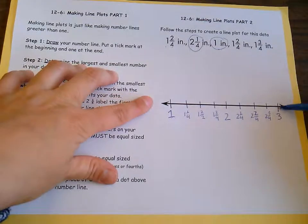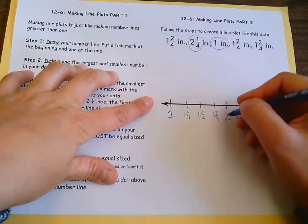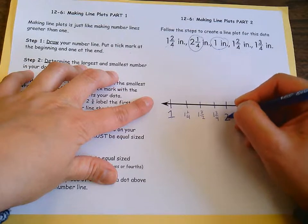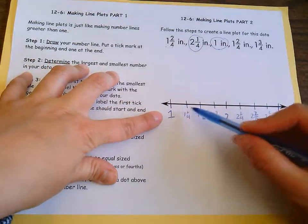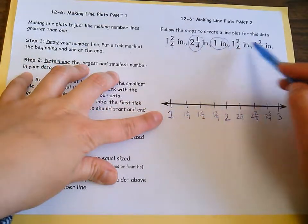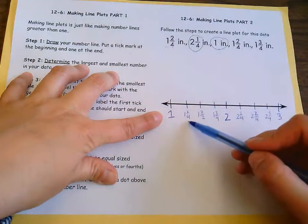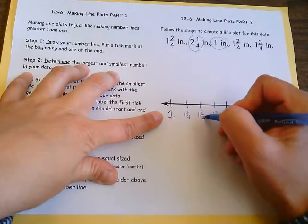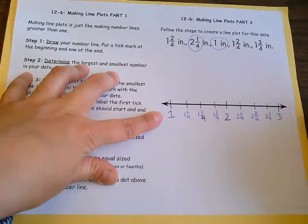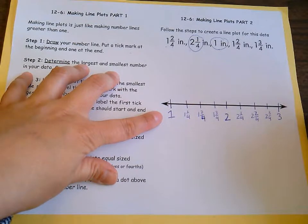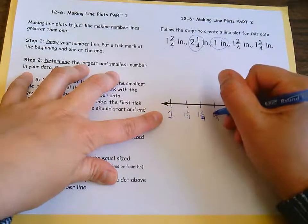After that, I figured out what my whole numbers were missing and I filled in just that one number that was missing. Then I partitioned my number line based on my fractions, and in this case it was fourths, so I put all of my fourths in there. At this time you might need to pause to catch up, and that's totally fine.